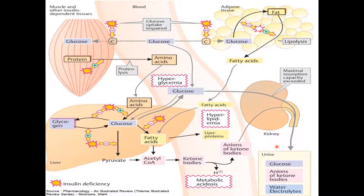This osmotic diuresis leads to dehydration, hyperosmolality, electrolyte loss, and decreased renal function. The final result of this imbalance is hyperglycemia, ketone production, metabolic acidosis, and hyperosmolality.